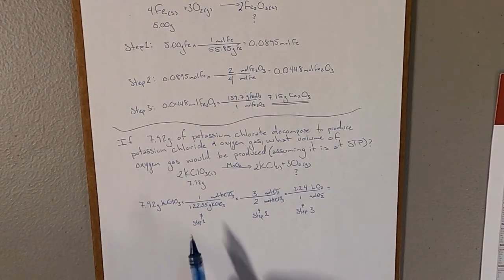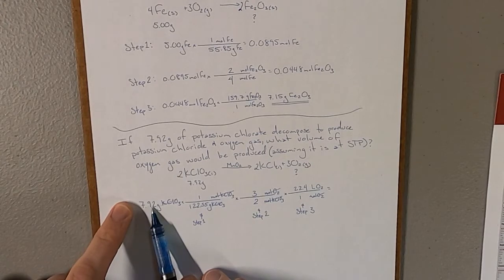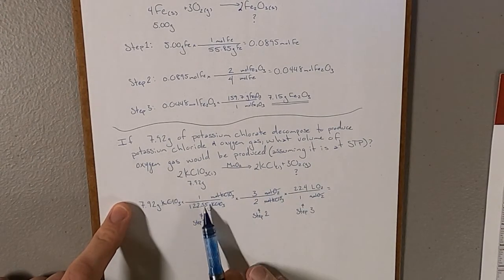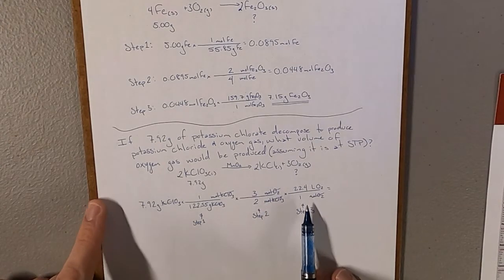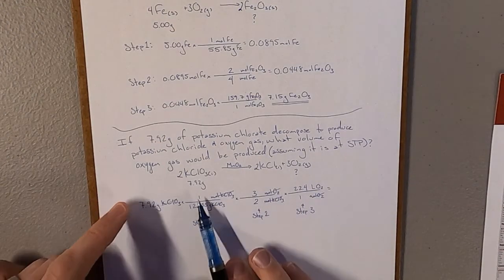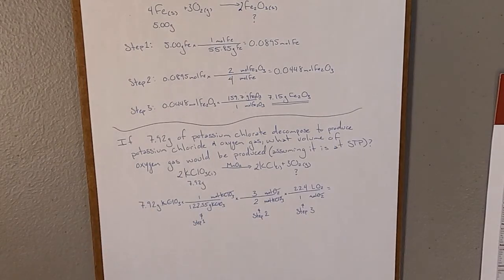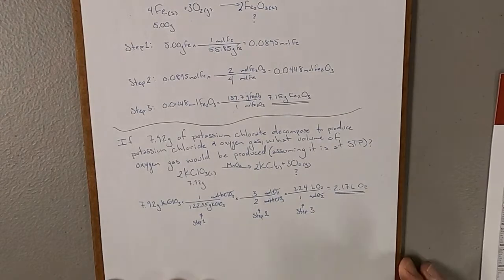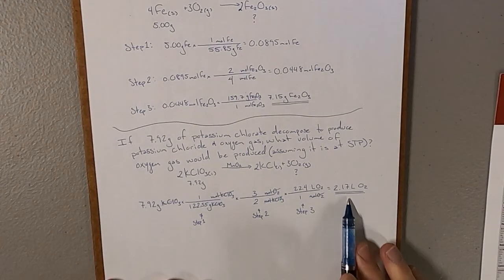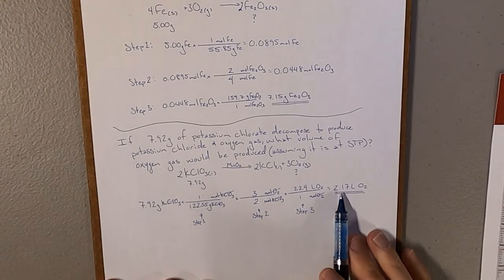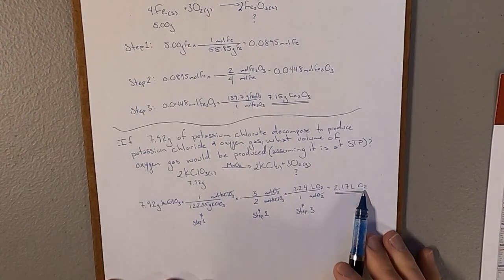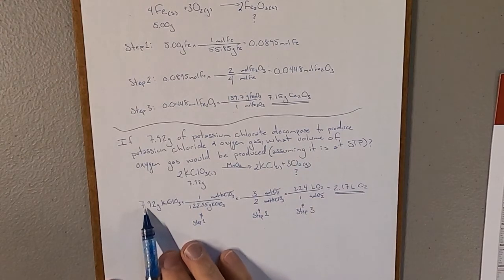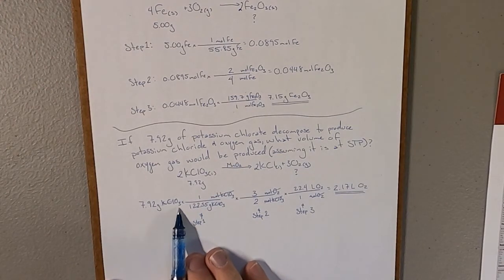To now calculate this, it would be 7.92 times all of these things on the top and dividing by all of these things on the bottom. And you can do them in whatever order, so long as you're making sure to multiply and divide correctly. And after doing those three steps, we get that our answer is that 2.17 liters of oxygen gas should be produced when you decompose 7.92 grams of potassium chlorate.